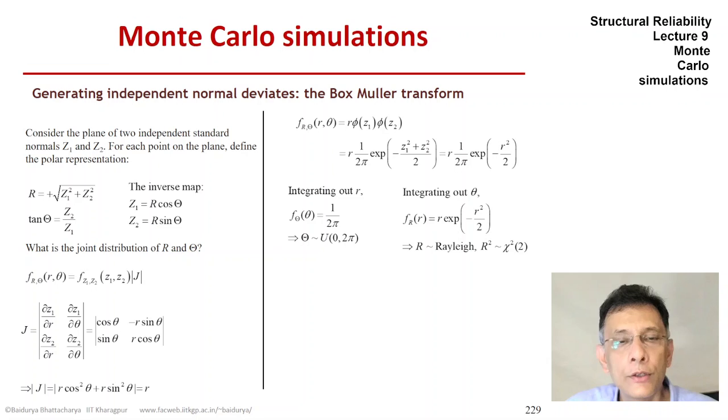And likewise, we can do it for the other variable and we will be left with the marginal density of r. And clearly, we end up with the uniform distribution for theta. So if Z1 and Z2 are independent standard normals, then the angle thus formed is uniform between zero and two pi. And the radius thus formed is Rayleigh distributed or r squared is chi squared with two degrees of freedom.